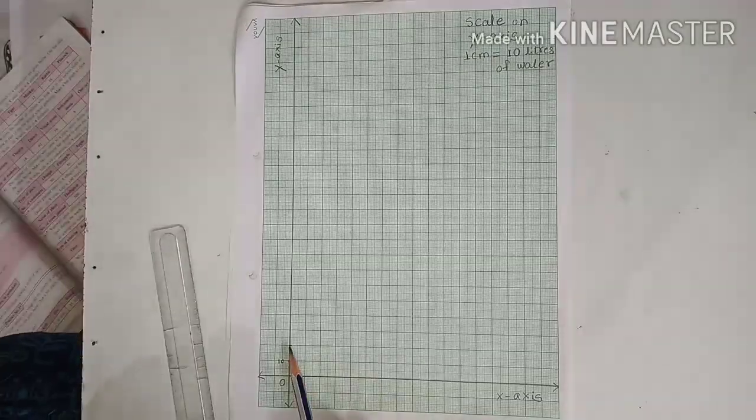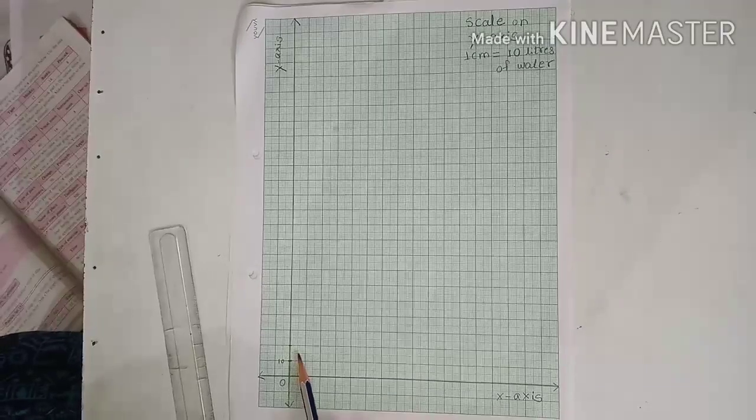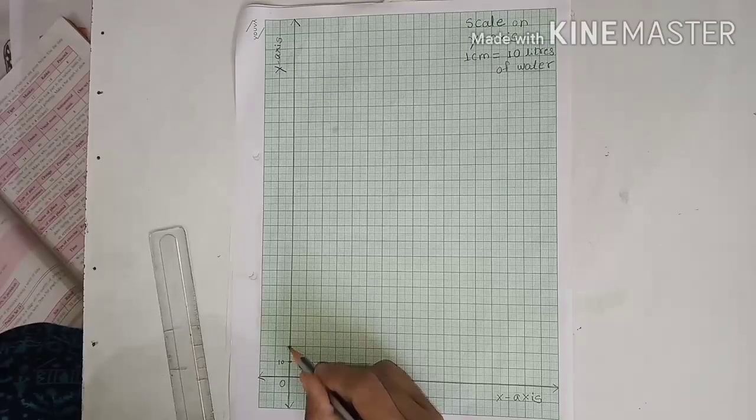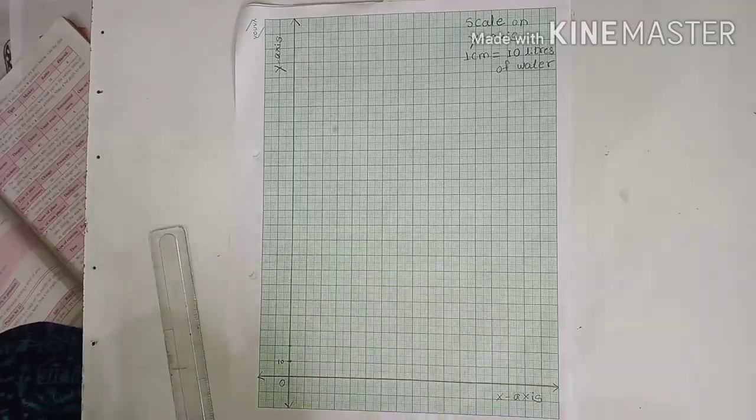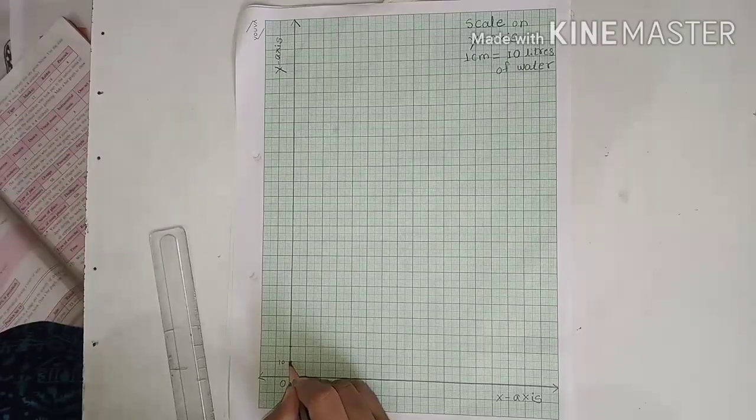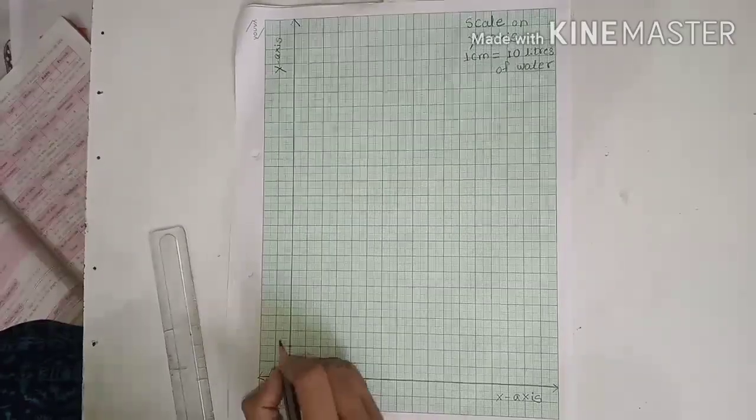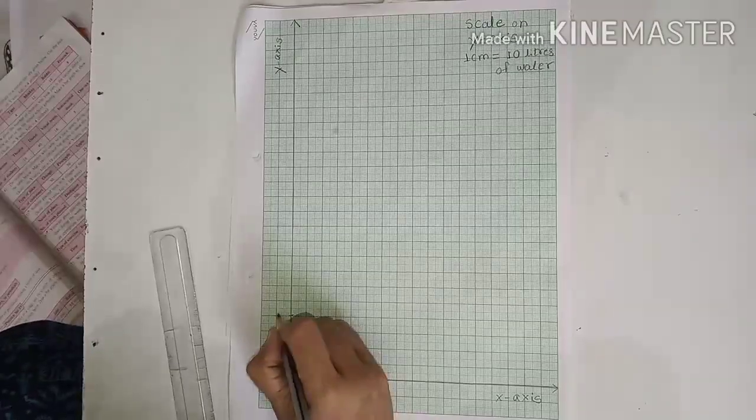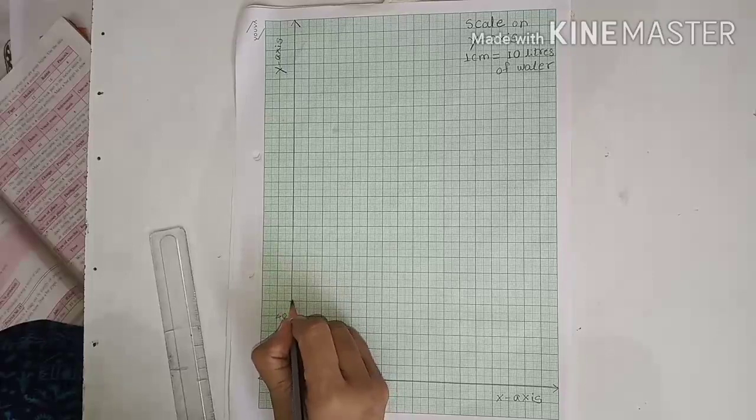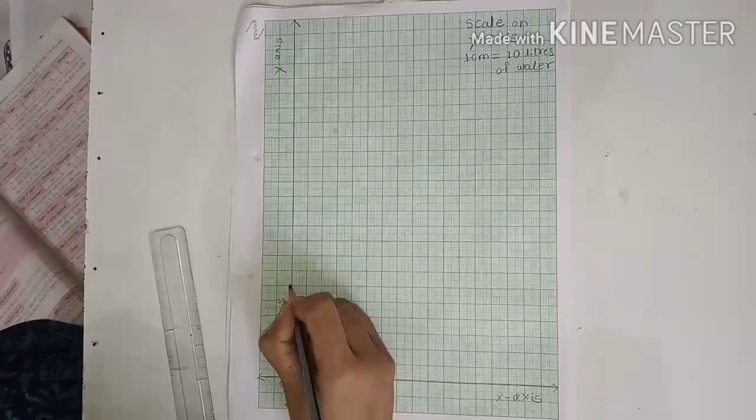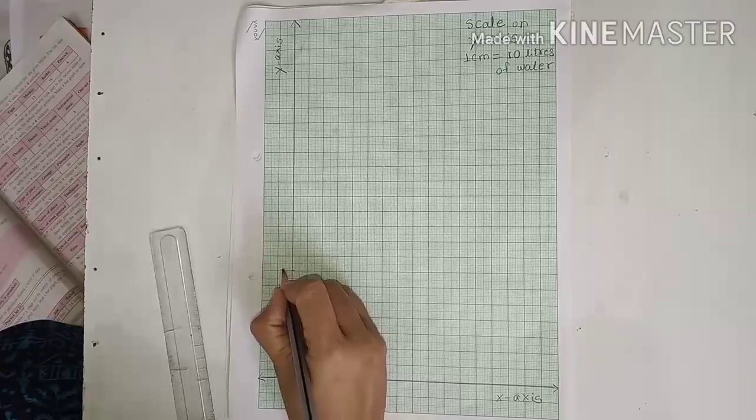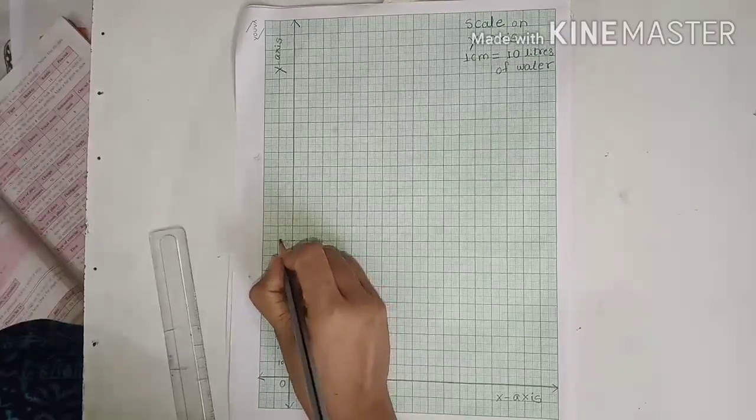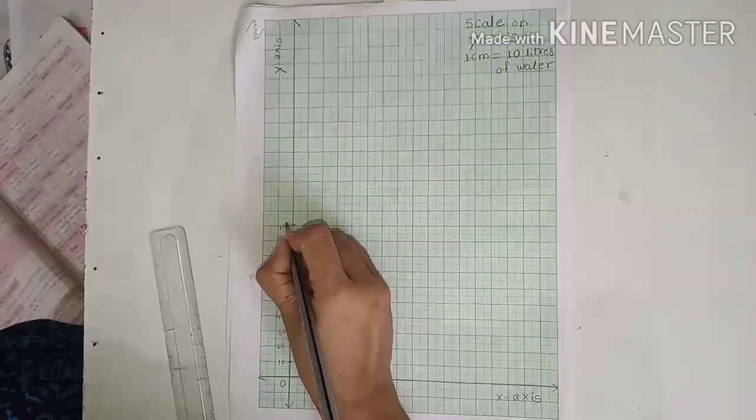1 cm is equal to 10 liters of water. 10, 20, 30, 40, 50, 60, 70, 80, 90, and 100. Okay.